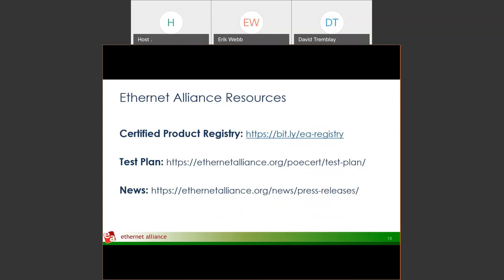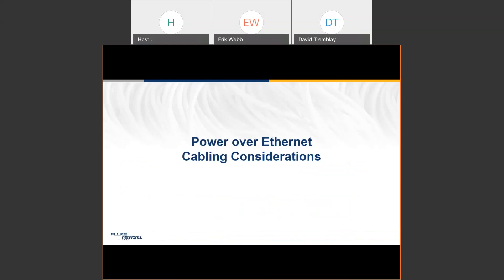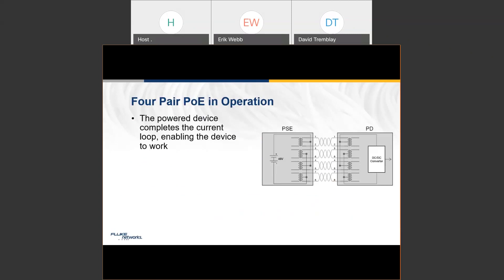Okay, this is Mark. I'm going to talk a little bit about Power over Ethernet cabling. The story we want to tell is that PoE operation is based on the fact that you've got Power Sourcing Equipment, a Powered Device, and that the powered device completes the current loop that allows DC power to flow through the cabling. As David mentioned, there are two-pair and four-pair implementations of PoE. The current needs to be very well balanced across all the different wires used — across all four wires for two-pair, or all eight wires for four-pair.